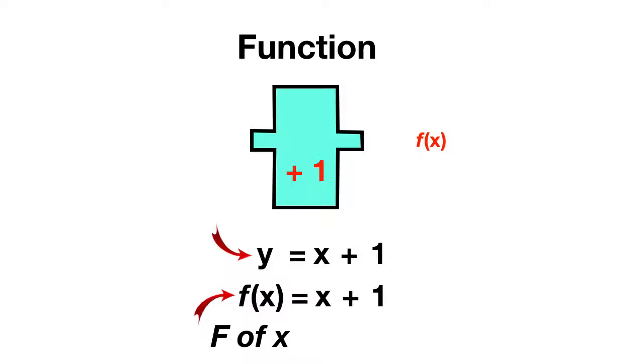Why then would anyone choose the more complicated one, the f of x? Well, it turns out that using f of x can make solving functions a little easier. Let's say you have the function f(x) equals x squared. Well, if you had y equals x squared, you'd have to solve for all the y values using one of these tables.